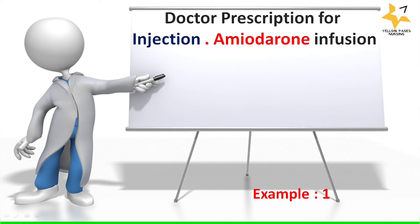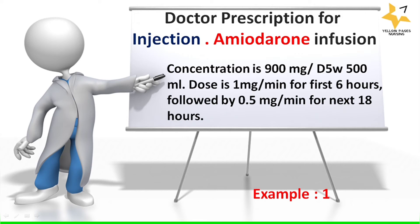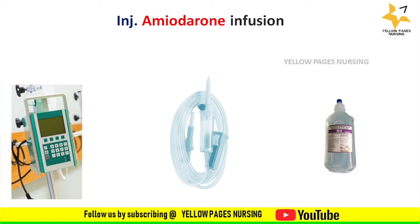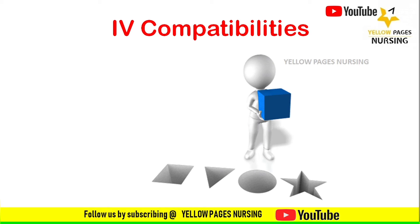The doctor's prescription for injection amiodarone infusion is: concentration 900 mg in D5W 500 ml, dose 1 mg per minute for the first 6 hours followed by 0.5 mg per minute for the next 18 hours. To prepare the infusion, we need an infusion pump, an IV set, and the dilution solution. Amiodarone can also be given through a syringe pump when 50 ml or less is to be administered.